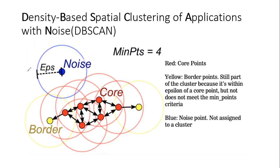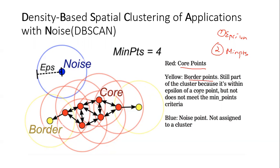Make sure you watch this video till the end because I've explained both the intuition part and the implementation part with Python and scikit-learn. To begin with, DB scan has four important components: epsilon, minimum points, core points, border points, and noise points.